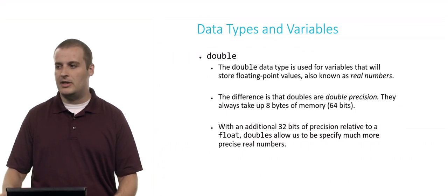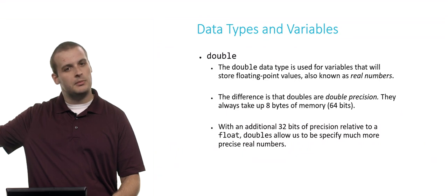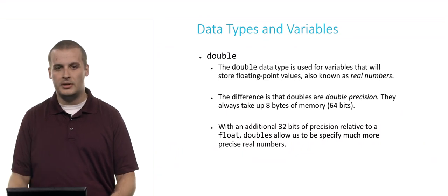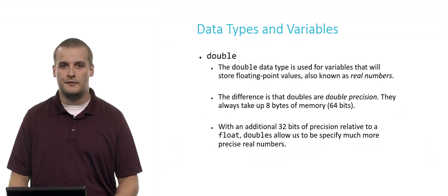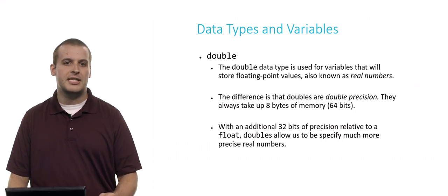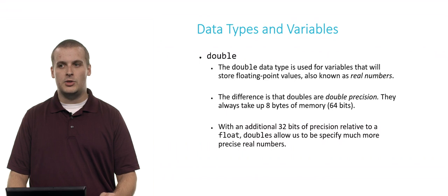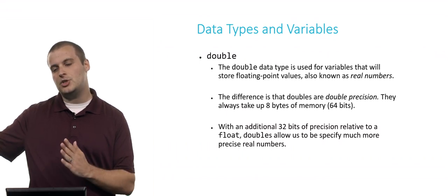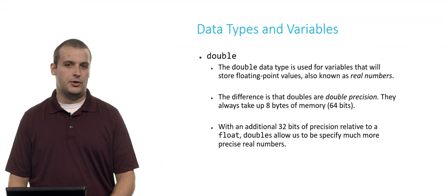Now, fortunately, there's another data type called double, which somewhat deals with this problem. Doubles, like floats, are also used to store real numbers or floating point values. The difference is that doubles are double precision. They can fit 64 bits of data, or 8 bytes. It means we can be a lot more precise with a decimal point. Instead of having pi to 7 places maybe with a float, we can maybe have it to 30 places.